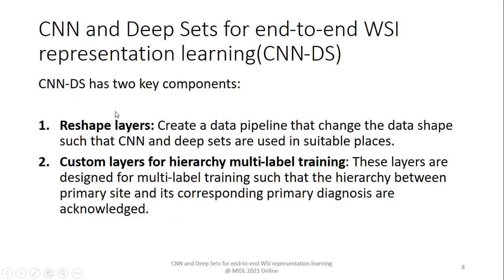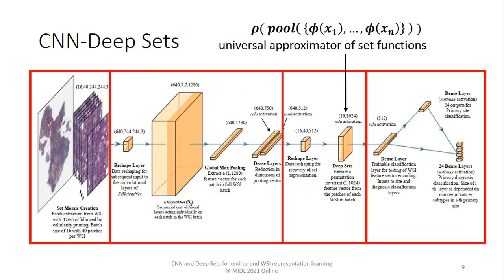Our core method, CNN and Deep Sets, has two key components: a combination of convolutional and deep set architecture, and reshape layers that create the data pipeline and change data shapes so that we can use CNN and Deep Sets in suitable places. We also propose some custom layers to respect the hierarchy between labels during training.